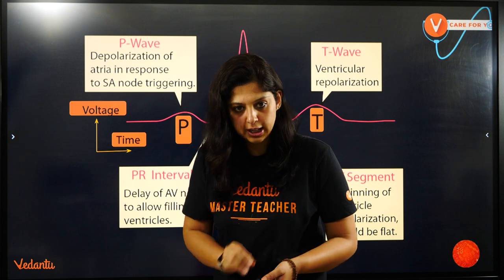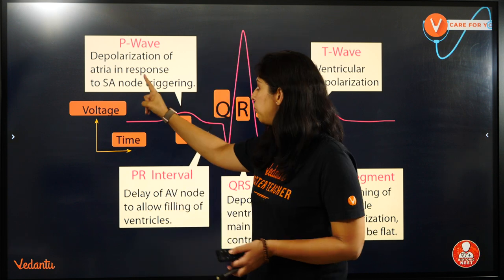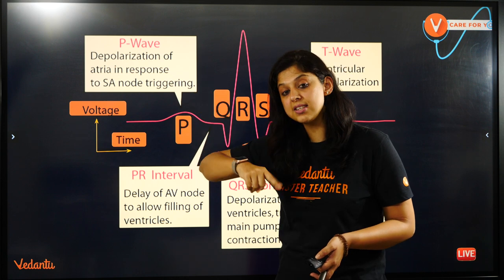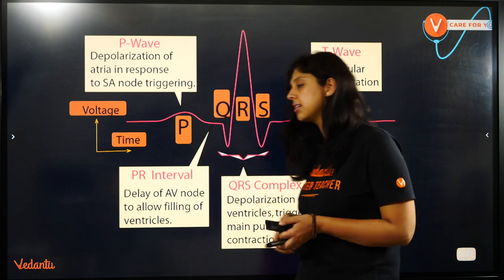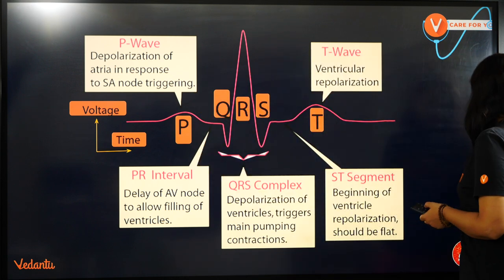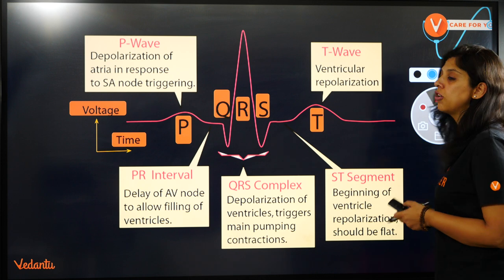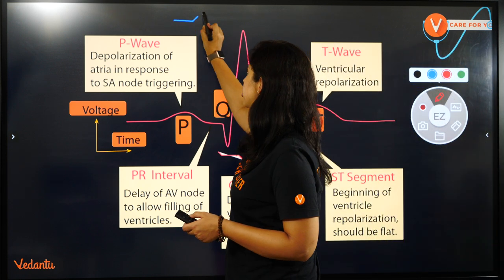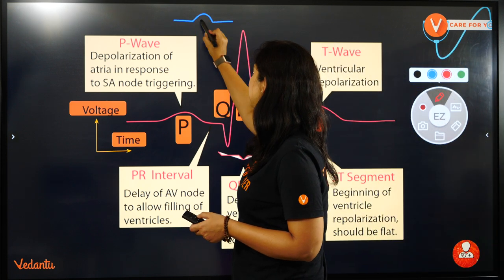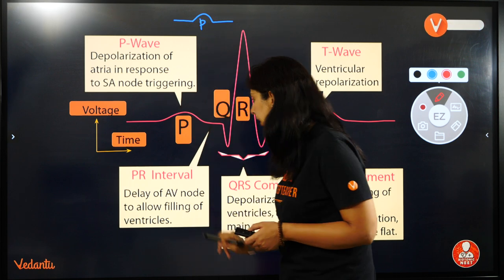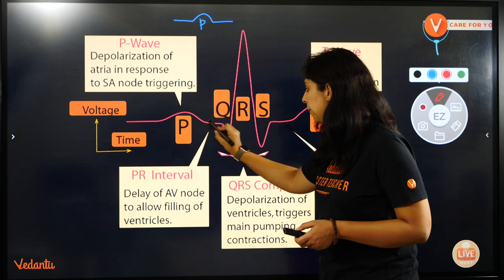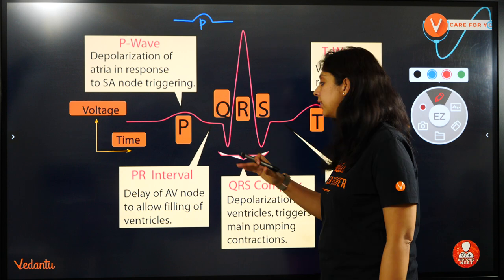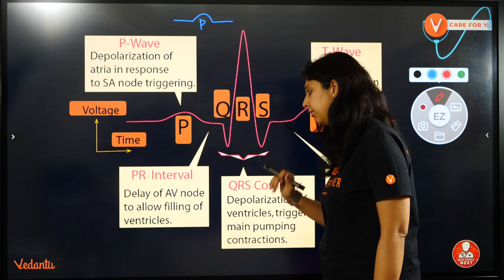So the impulse generation of the heart goes: first the SA node, then the AV node, then the bundle branches — right and left — then the Purkinje fibers. As the heart contracts, it is called depolarization. Depolarization of the atria in response to the SA node signal causes contraction of the atria — an upward deflection which is called the P wave. The interval between P and R is called the PR interval.